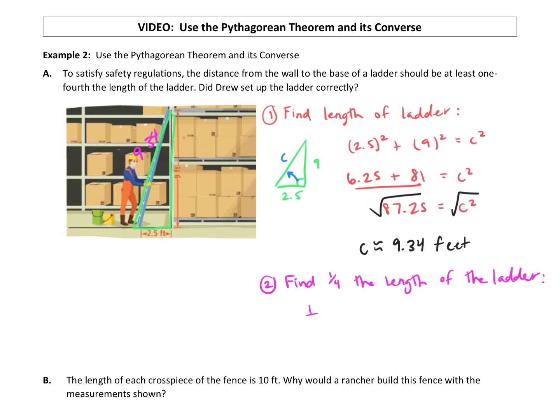So all we do is we take one-fourth times the length of the ladder, we just figured out, was 9.34. We multiply that out, and we get about 2.335. So to meet the safety regulation, the ladder must be at least this many feet away from the wall. 2.335 feet from the wall.